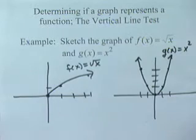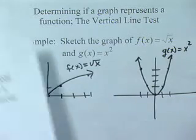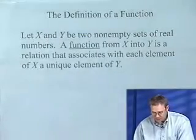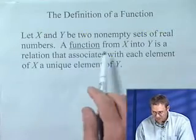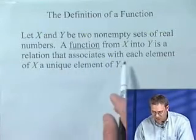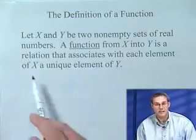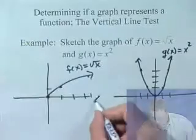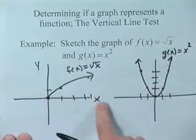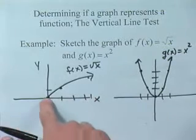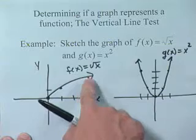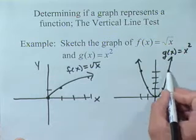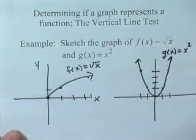Now, let's take a look at these things. Remember the definition of a function. We let X and Y be two non-empty sets of real numbers. A function from X into Y is a relation that associates with each element X a unique element of Y. And that's the special definition, part of the definition here. Notice, for each X value, we have exactly one corresponding Y value. Same thing over here. For every X value, there corresponds just one Y value. These are functions.